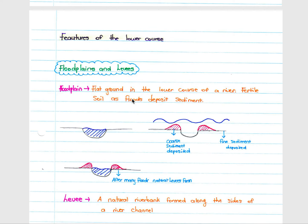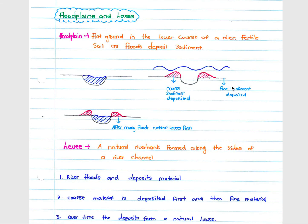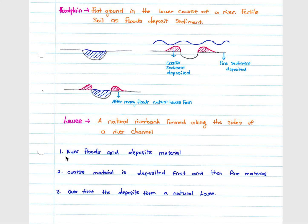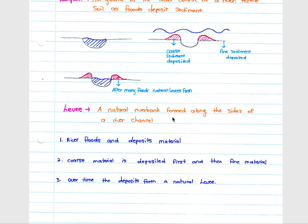The most common lower course features are floodplains and levees. A floodplain is the flat ground in the lower course with fertile soil, as floods deposit nutrient-rich sediment. Levees form when a river floods and deposits sediment along its banks — coarse sediment is deposited closest to the river and finer sediment is carried further out. After numerous floods, sediment builds up on the banks, forming natural levees — natural raised river banks formed along the sides of the river channel.